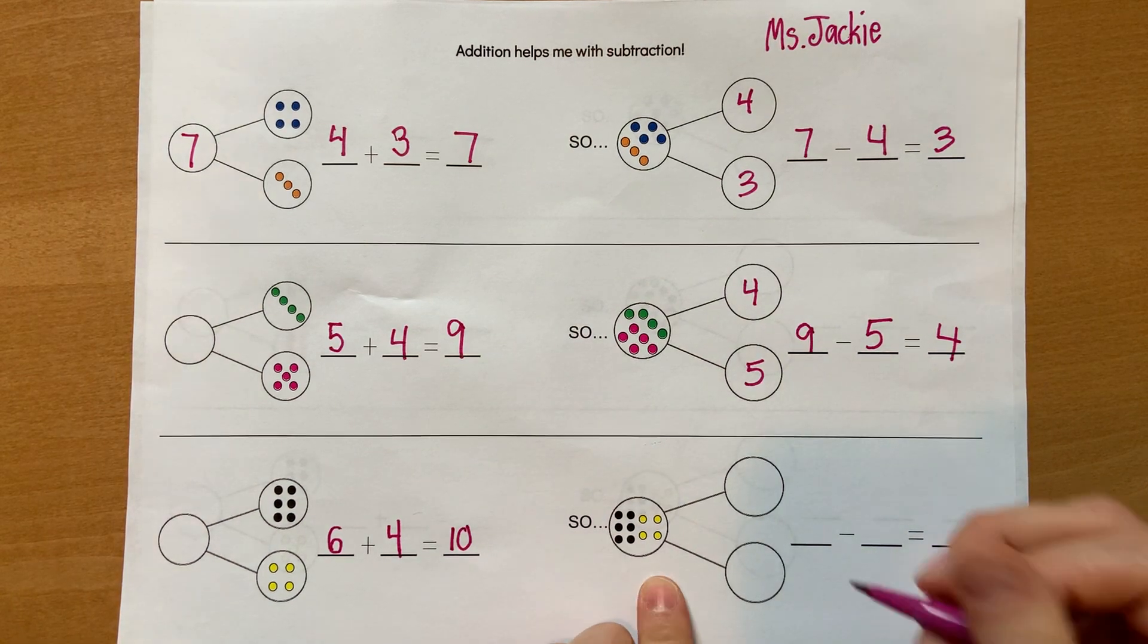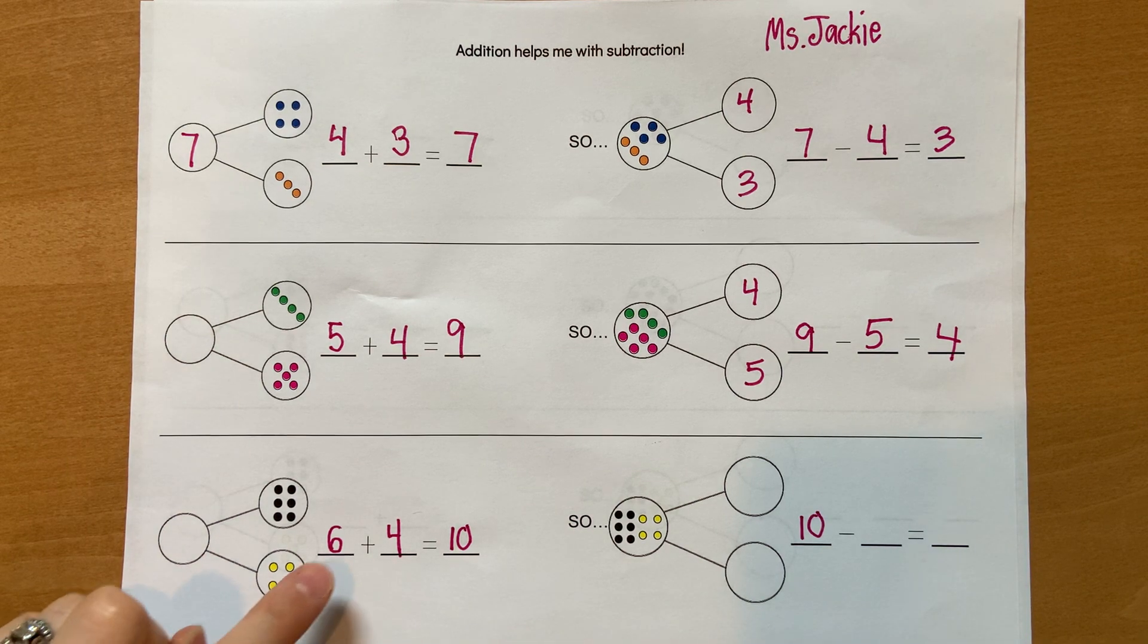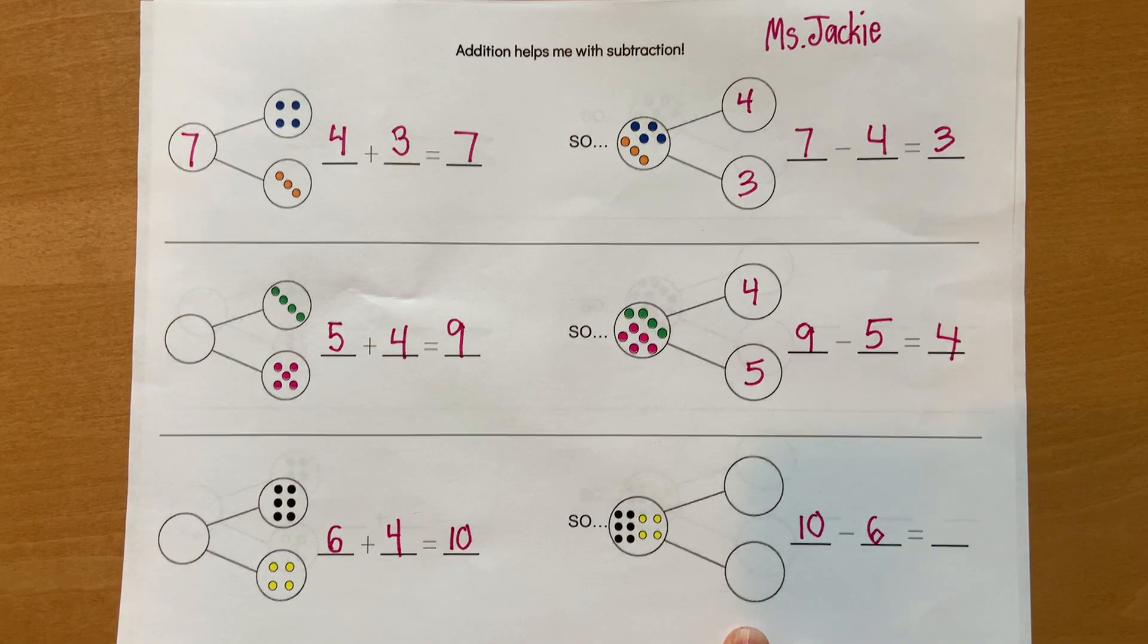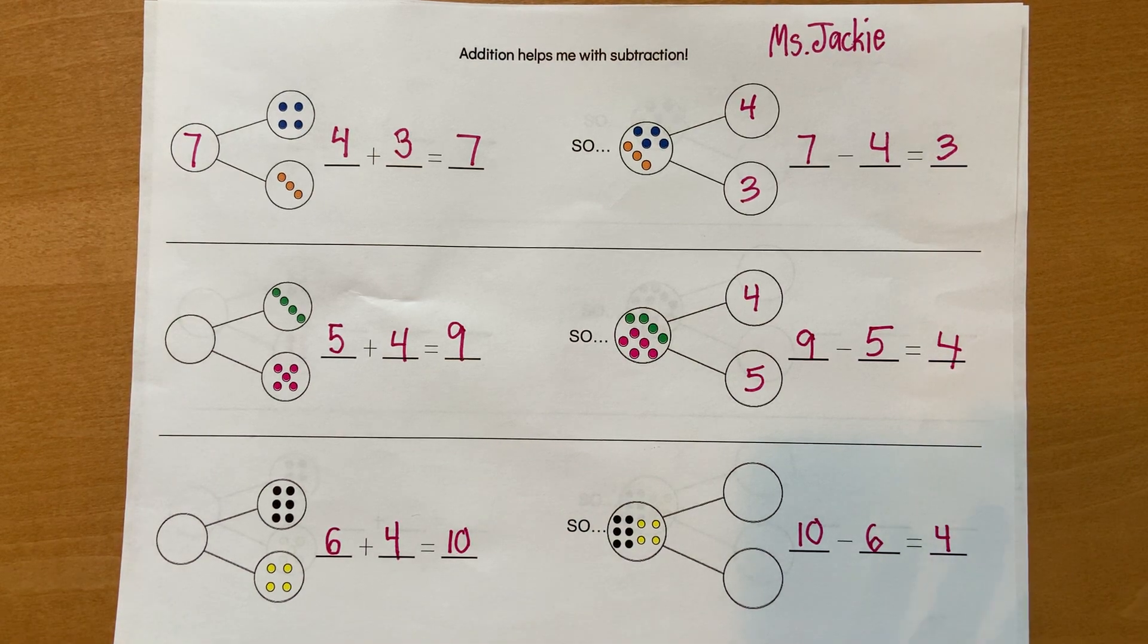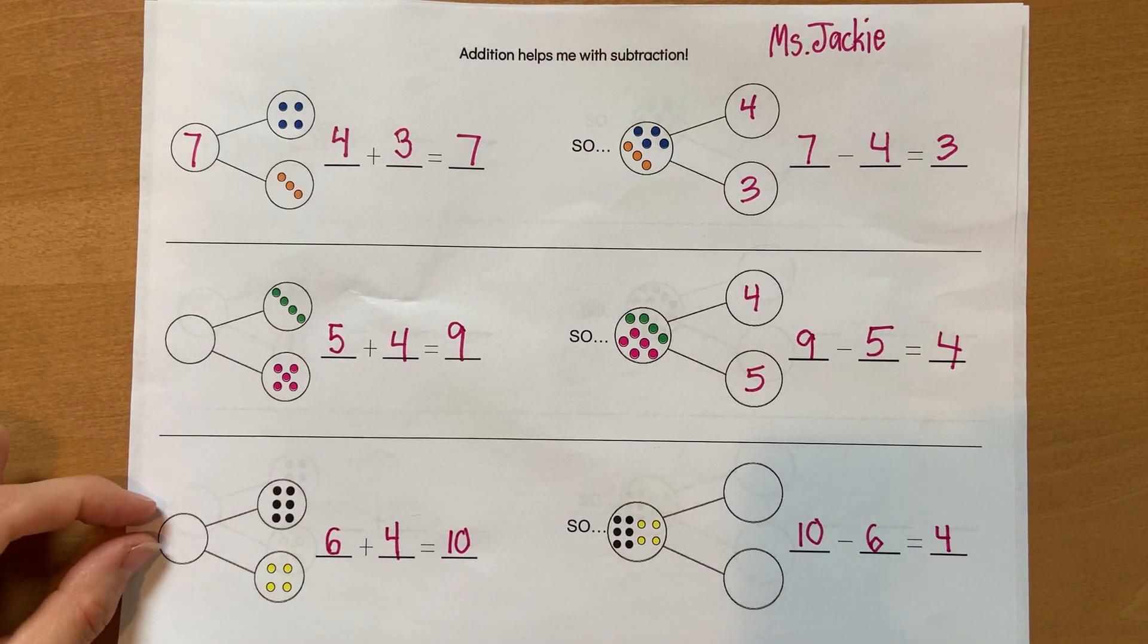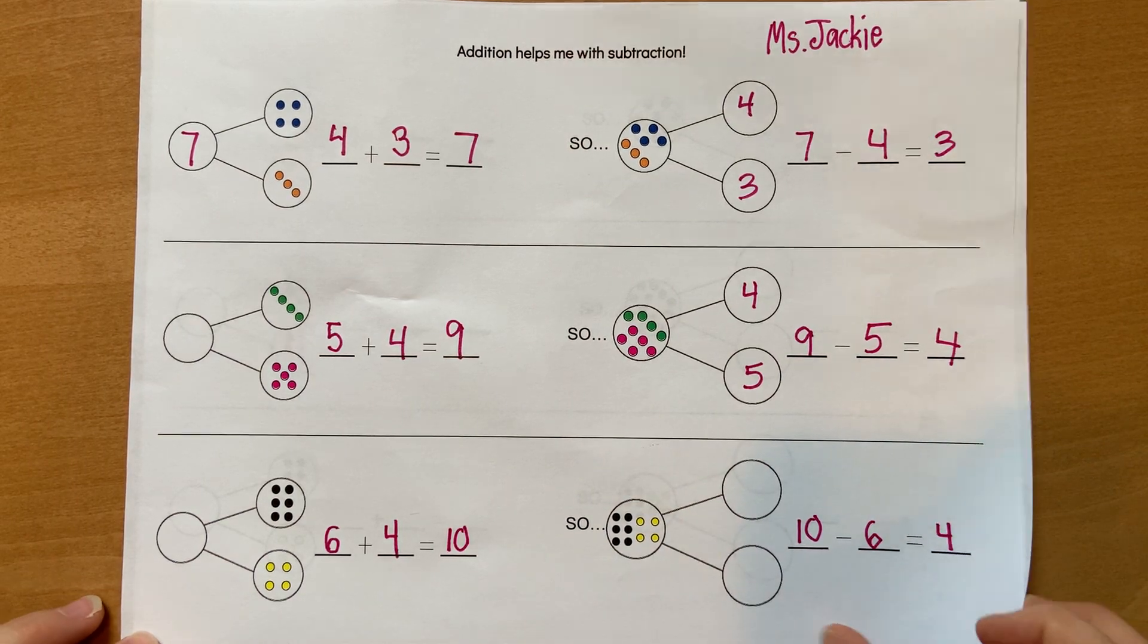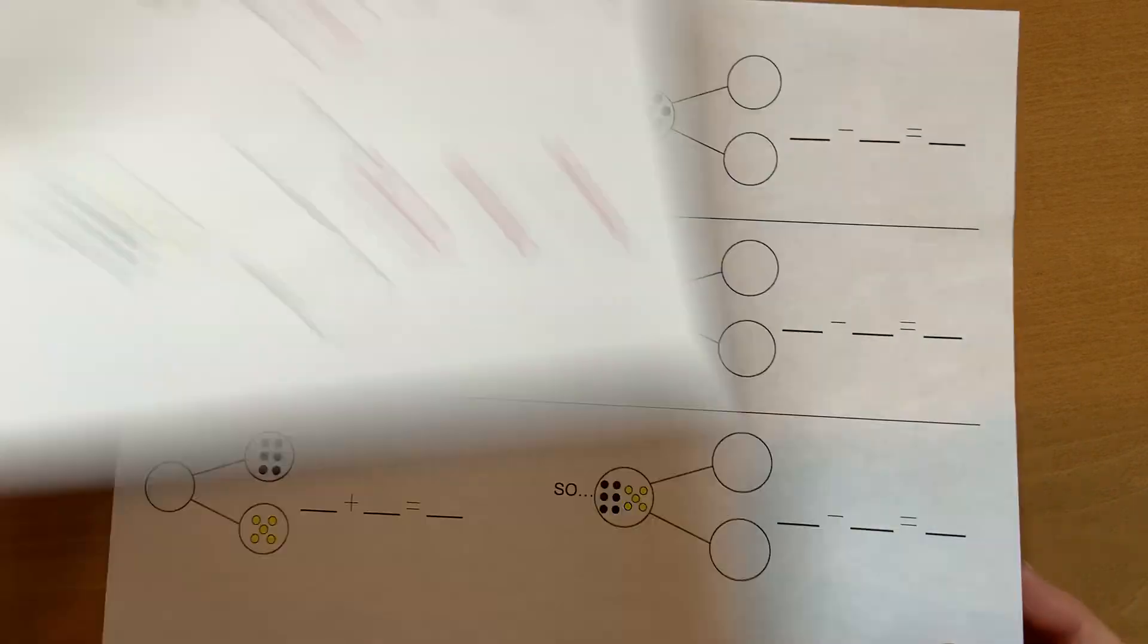So that's the hard part, is a lot of kids see ten minus something, and they think it's harder. But it's not. You know six plus four makes ten. So if I take away six, how many will it be? That's right, four. Addition helps me with subtraction. We have the part part, and we put them together for the whole, or we have the whole, and we can take it apart to make the parts. All right, flip your paper over, and let's do another one.